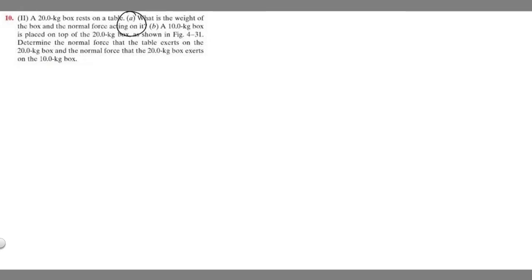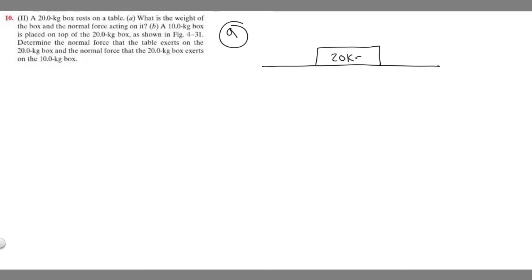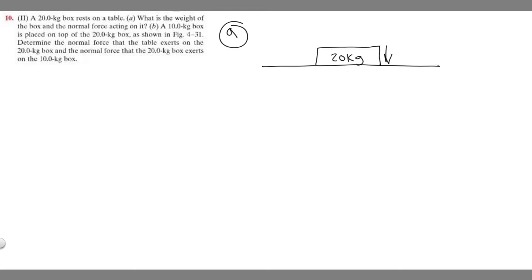Let's start with part A. We have a 20 kg box resting on a table. The weight of the box is the force acting downward, and the normal force is the force that acts perpendicular to the surface.